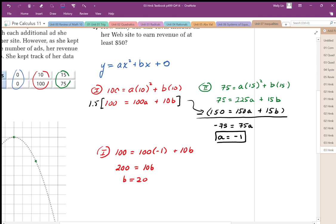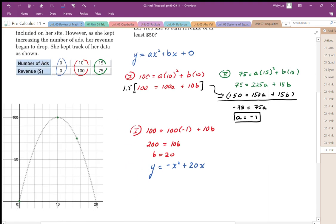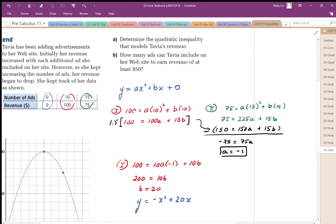So now I've solved my quadratic equation. My quadratic equation is going to look like this. The equation that goes through those points is y equals negative x squared plus 20x. Okay, so I've drawn that here. This is the curve that goes through those three points. So that's the first part.